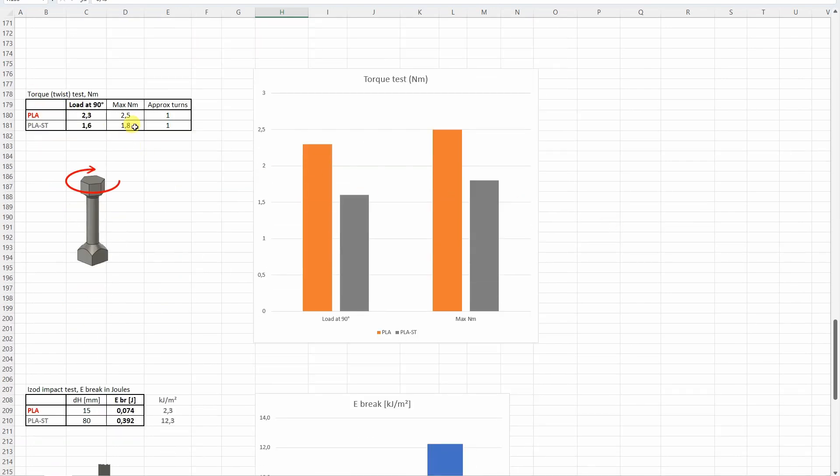This is the torque test where I measured the load at 90 degree angle and the maximal load. Again the PLA was better, but you saw I could do more rotation - this is inaccurate - maybe even two turns with the Strongman PLA until it broke.